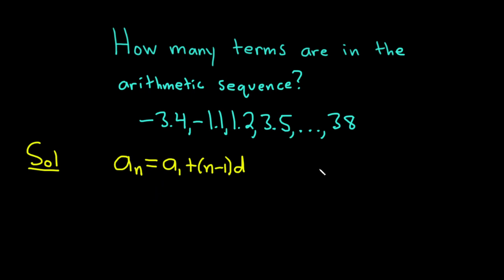There's not always a last term. Sometimes these sequences go on forever. However, in this case, we do know a sub n. It's going to be 38 because that's the last term. And a sub 1 is the first term. So that's negative 3.4 plus parentheses n minus 1. And then we need to figure out d. d is called the common difference.